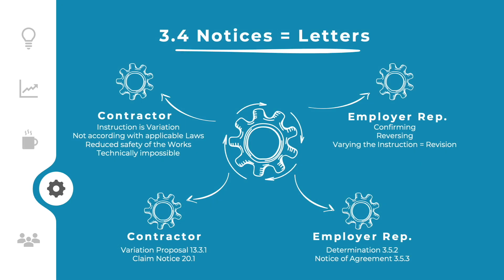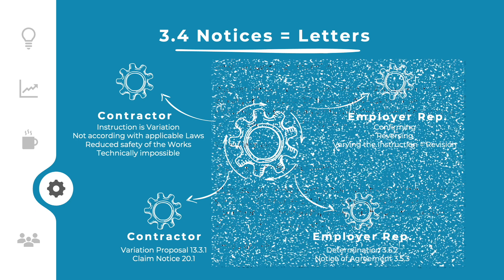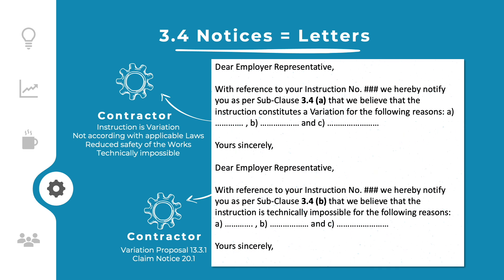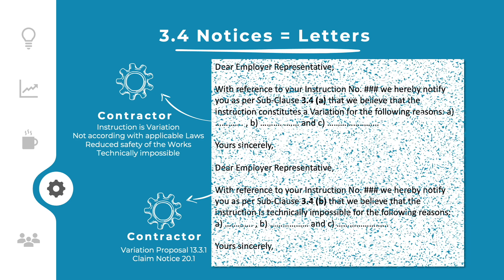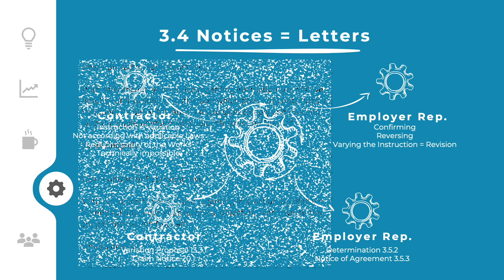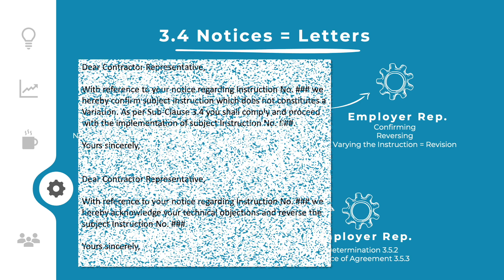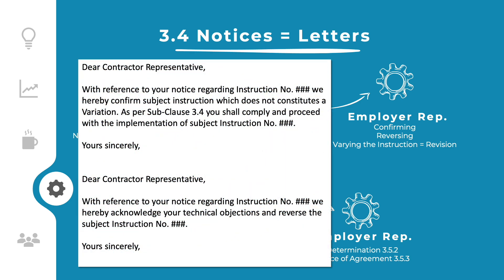The parties shall pay attention to their notification obligations in sub-clause 3.4. If the contractor believes that the instruction is a variation or has other objections as per sub-clause 3.4(b), then they have to send a notice immediately. The employer's representative shall, within seven days, respond to the contractor's notice.